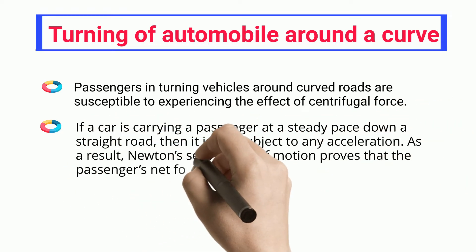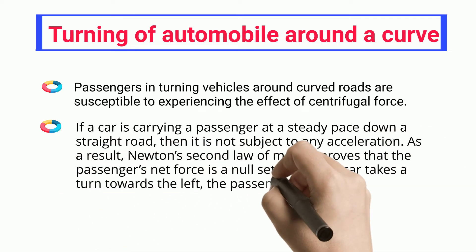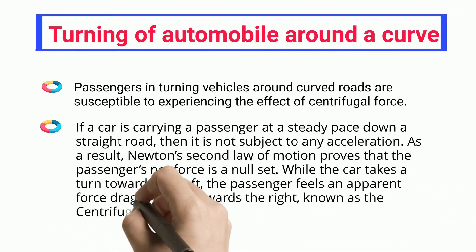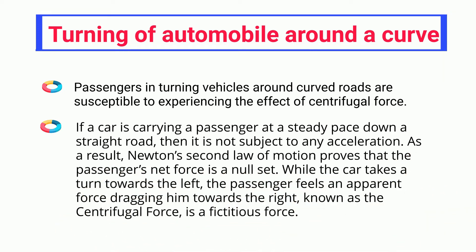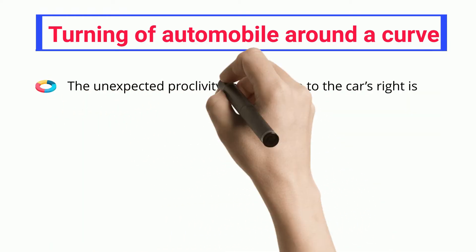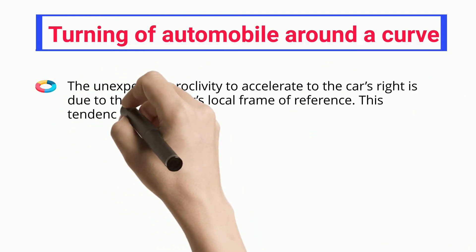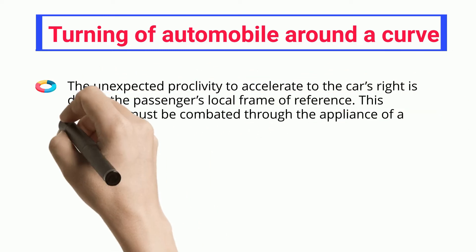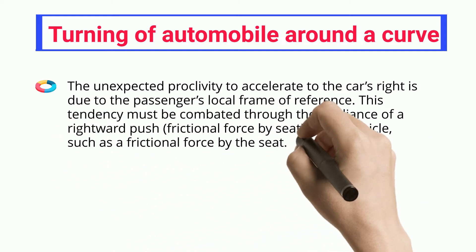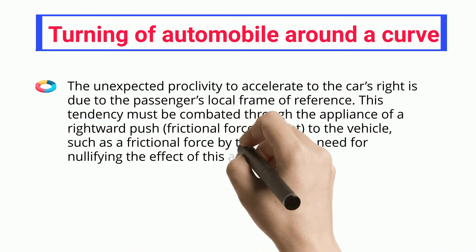As a result, Newton's second law of motion proves that the passenger's net force is a null set. While the car takes a turn towards the left, the passenger feels an apparent force dragging him towards the right, known as the centrifugal force — a fictitious force. This unexpected tendency to accelerate to the car's right is due to the passenger's local frame of reference, and must be combated through the application of a rightward frictional force by the seat.